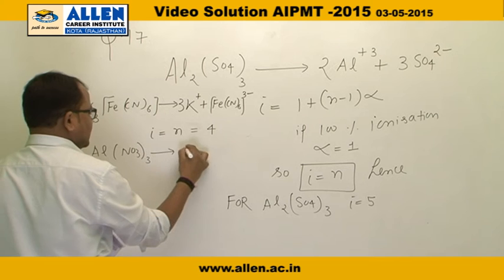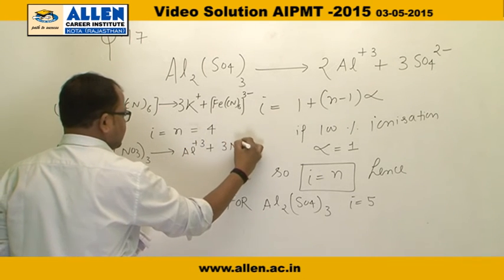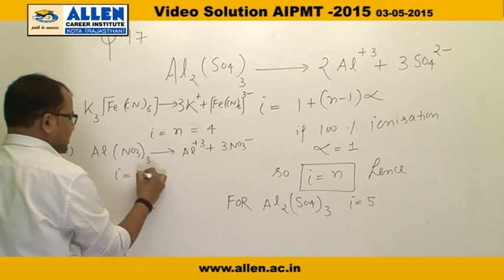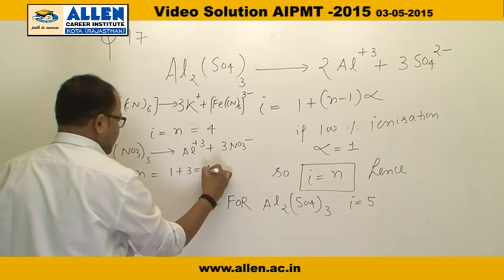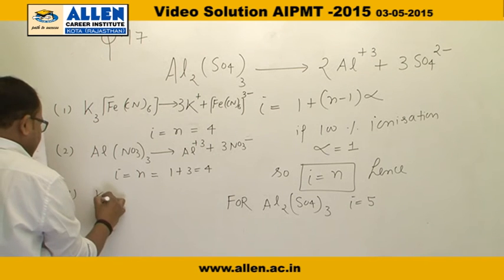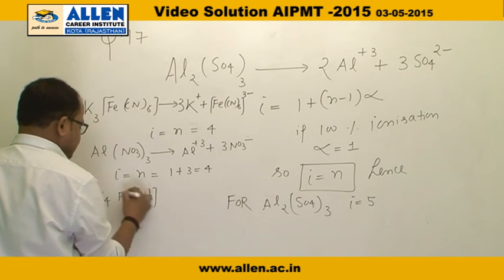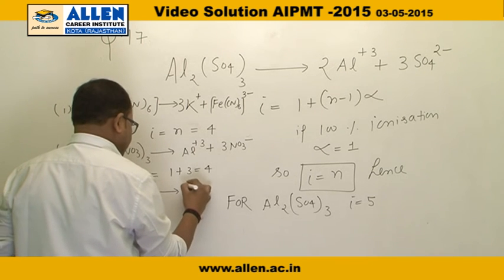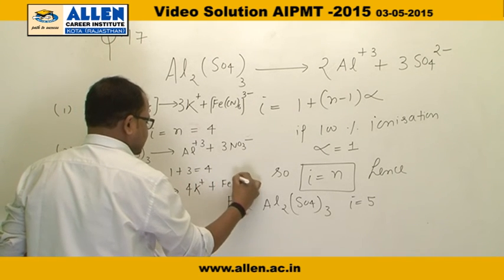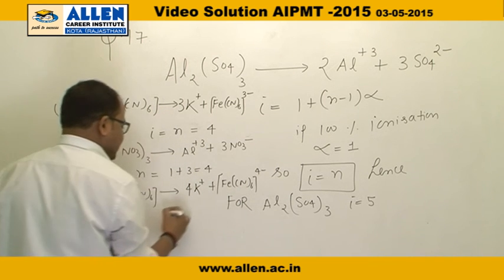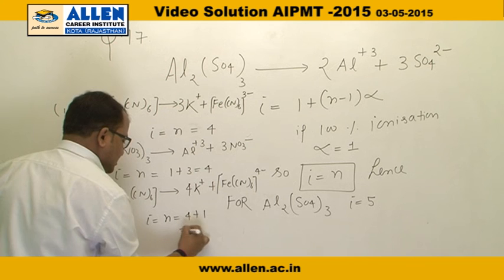Option two: Al(NO₃)₃ dissociates into Al³⁺ and three NO₃⁻, so n = 1 + 3 = 4, hence i = 4. Option three: K₄[Fe(CN)₆] dissociates into four K⁺ and one [Fe(CN)₆]⁴⁻, giving n = 4 + 1 = 5, hence i = 5.